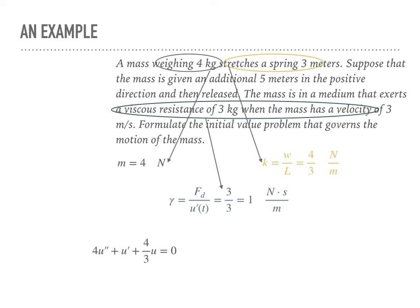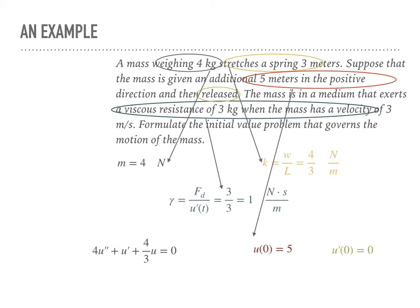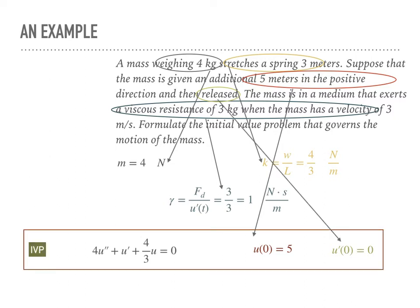Using this second-order differential equation, you can solve for u(t) to find the position of the mass at any time t. The mass is given an initial displacement of positive 5 meters, so u(0) = 5. It is then just released, meaning no initial velocity, so u′(0) = 0. Combined with the differential equation, these two initial values form an initial value problem (IVP).